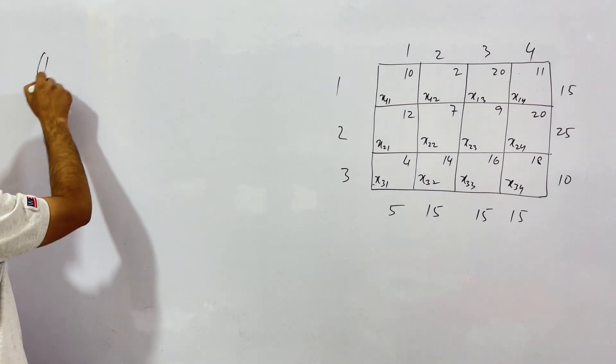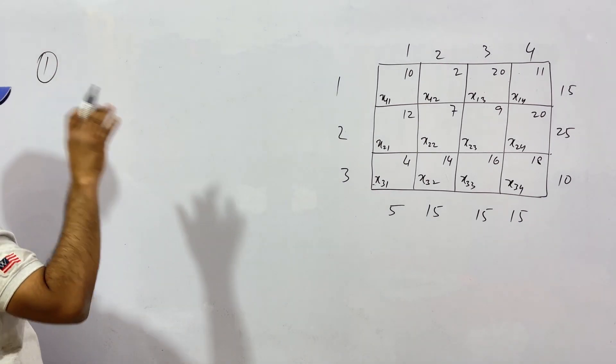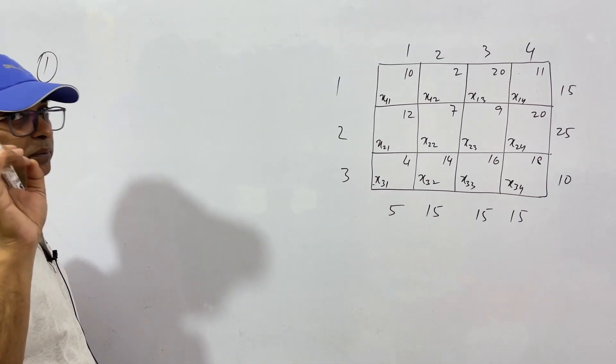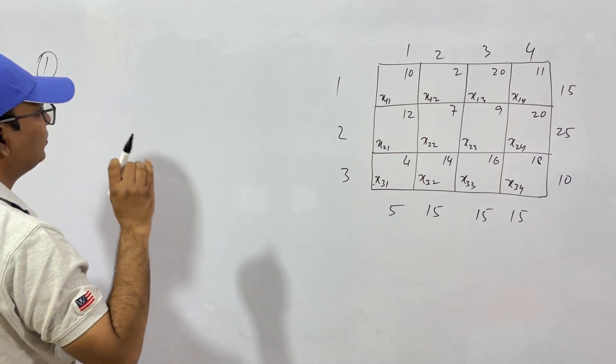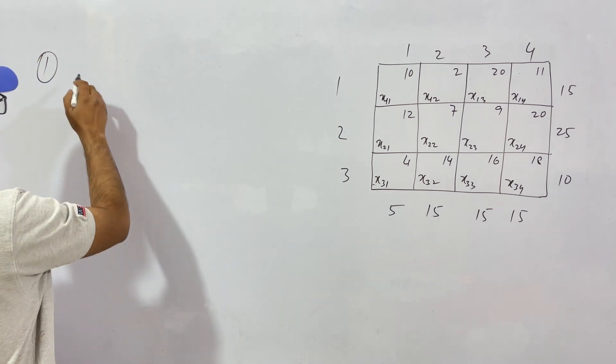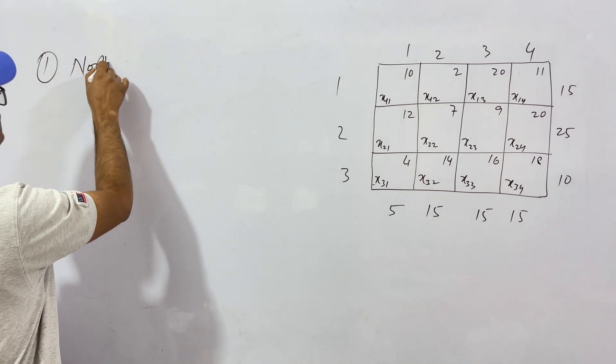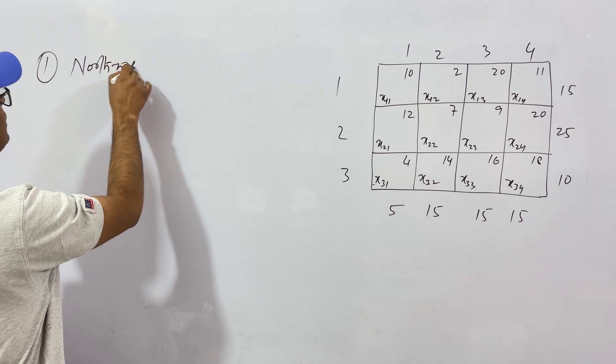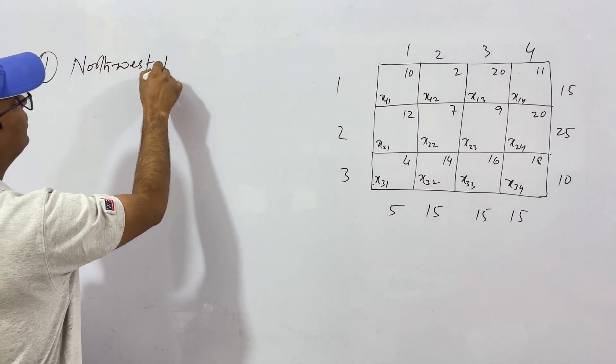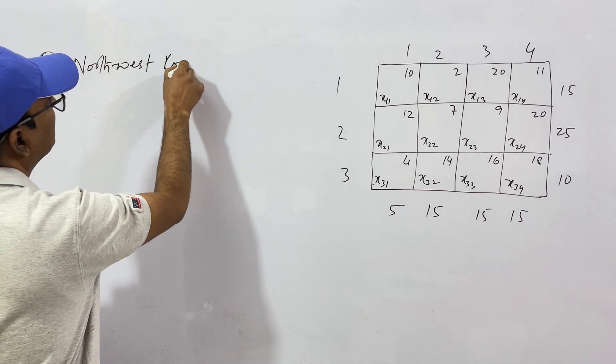The first consumption unit has a demand of 5, second has demand of 15, third and fourth also have demand of 15 items. Supply: the first source produces 15 items, second source produces 25 items, and third source produces 10 items. Now let us find the basic feasible solution — the starting feasible solution — using the North-West corner method.